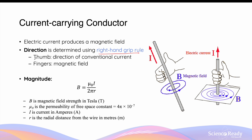This is where we point our thumb in the same direction as the conventional current that runs through the conductor, and we grip our fingers into a fist form such that the fingers curl around the straight conductor to represent the direction of the circular magnetic field. In this diagram, you can see the person's thumb is pointing upwards in the same direction as the conventional current, and the fingers curl around the conductor in the same direction as the circular magnetic field.